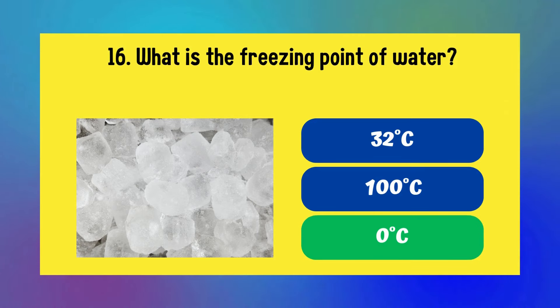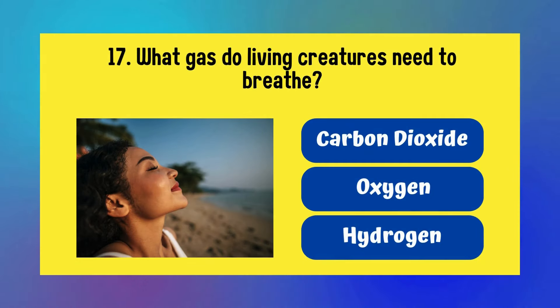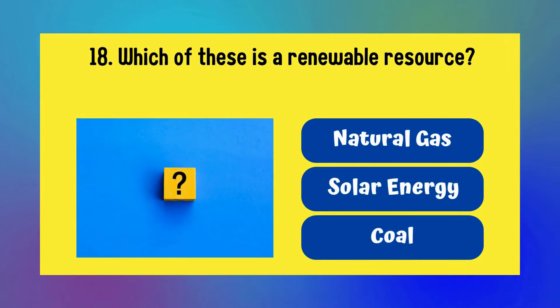It is 0 degrees Celsius. What gas do living creatures need to breathe? Carbon dioxide, oxygen, or hydrogen? Answer is oxygen. Which of these is a renewable resource? Natural gas, solar energy, or coal? Answer is solar energy.